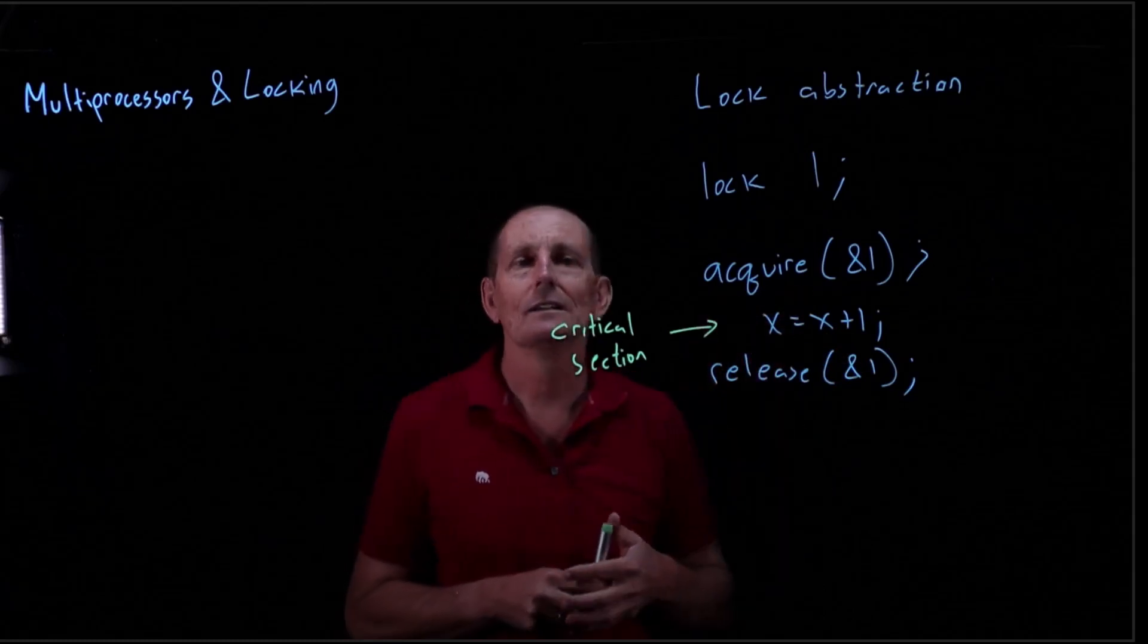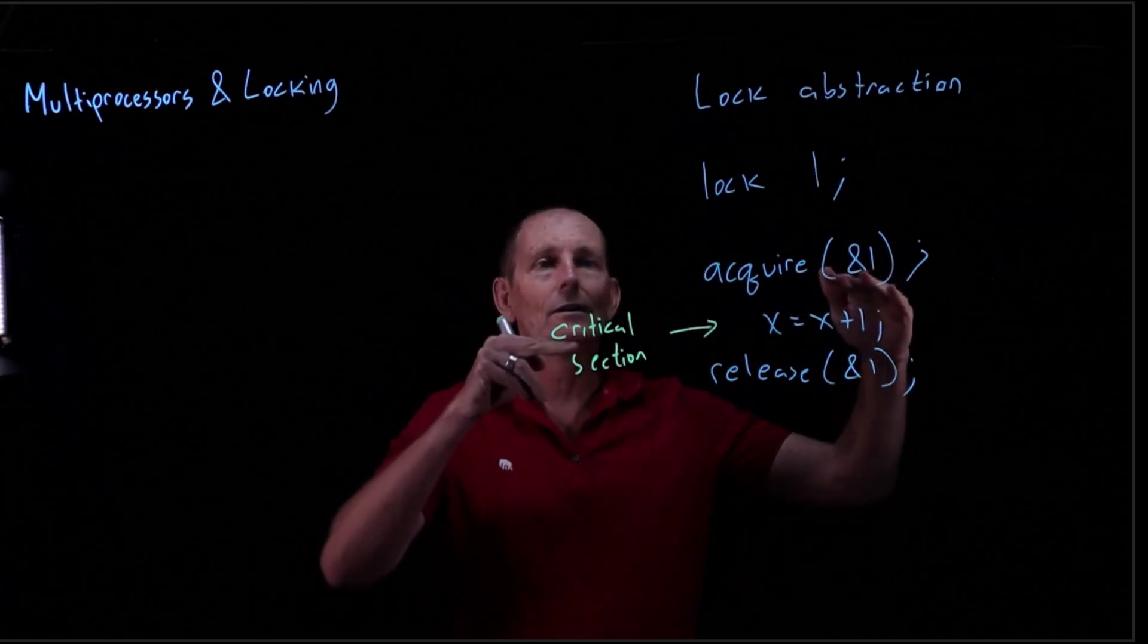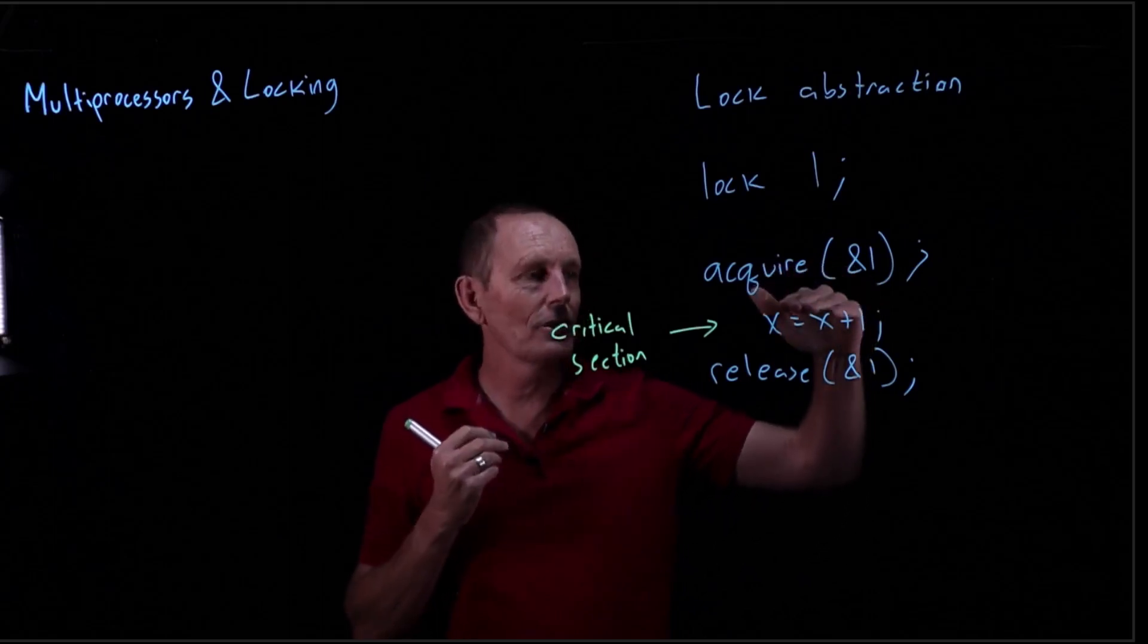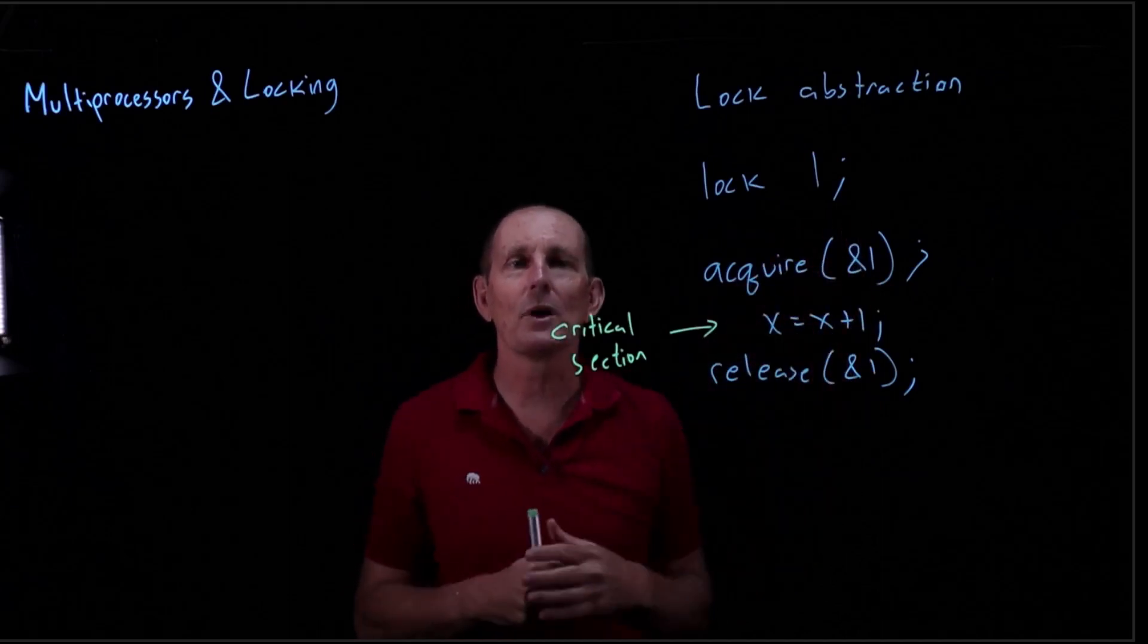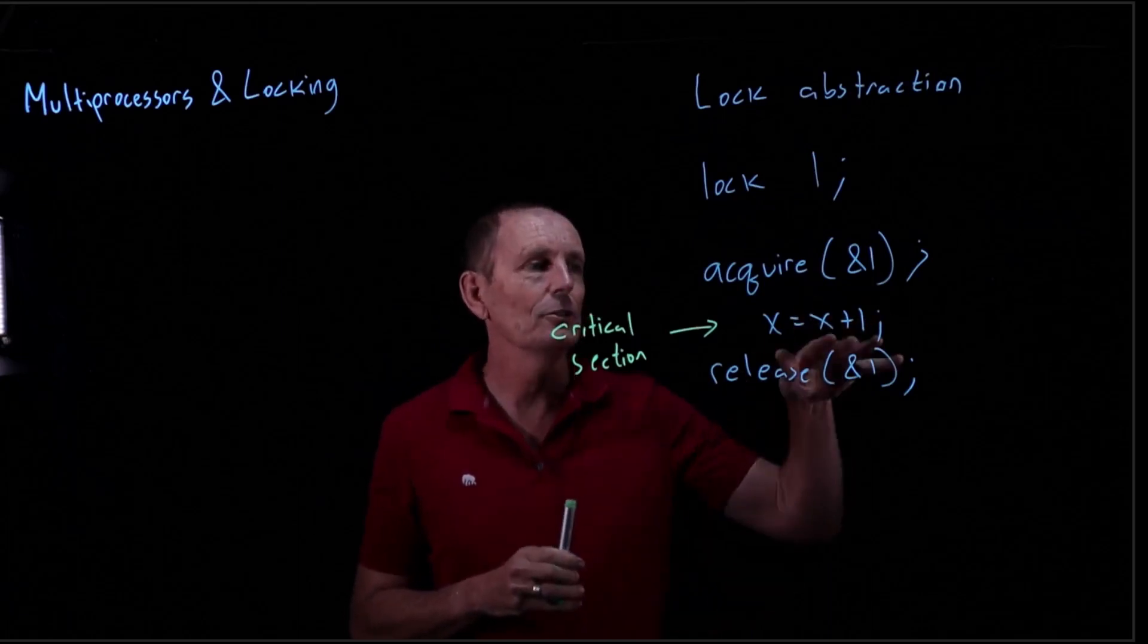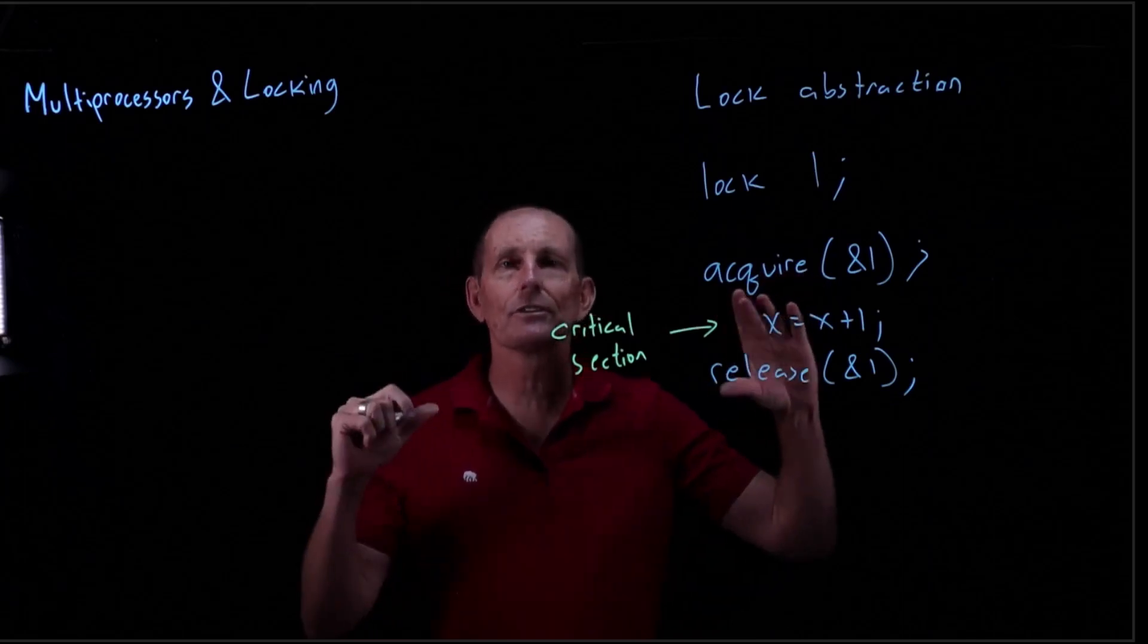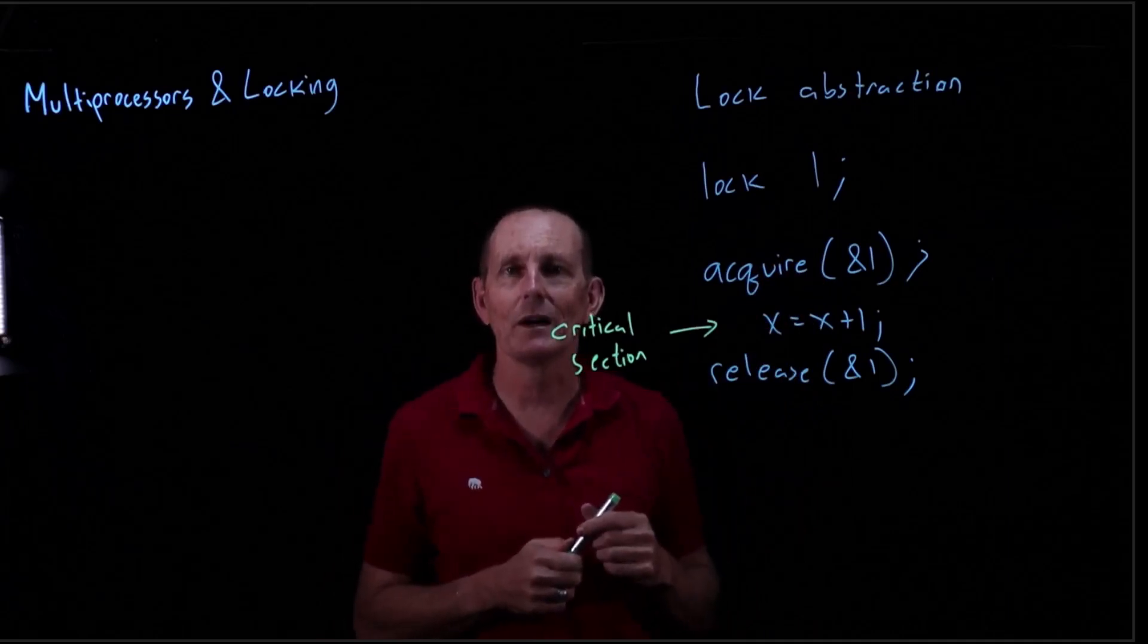What the lock abstraction allows is if multiple threads call acquire, only one actually acquires the lock. It goes on and runs its critical section. And then when it runs release, another process that has called acquire is then free to continue running. If you want to protect different data, use different locks. So if you have different critical sections, you set up different locks, and that way you can have independent critical sections that run in parallel.